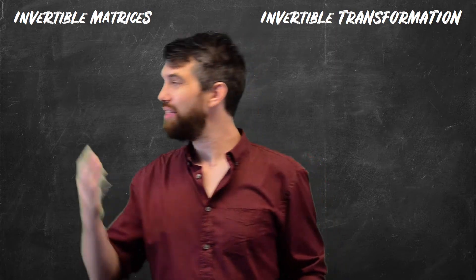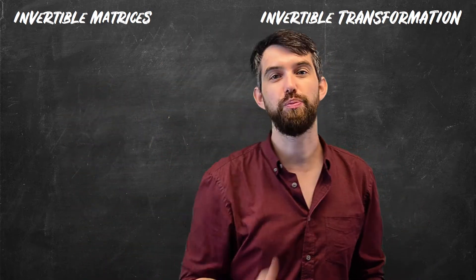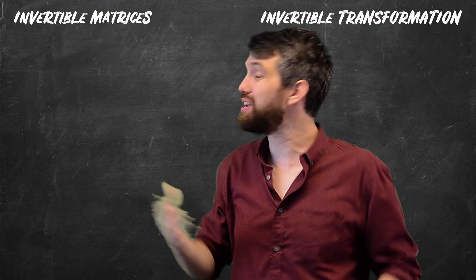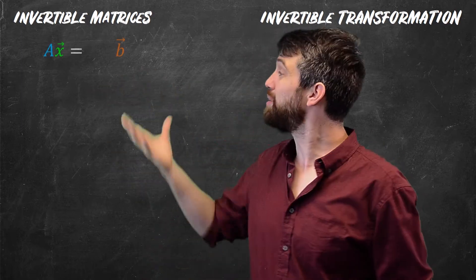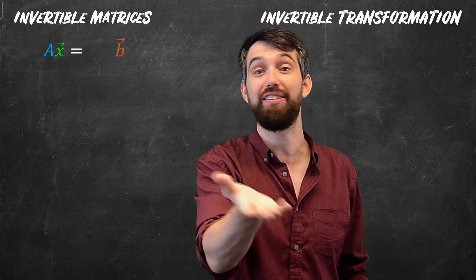So, for example, the invertible matrix part, this is an algebraic construct. And the main point of algebraically wanting an invertible matrix was that if I began with a system like Ax equal to b, I've left a little bit of a space,